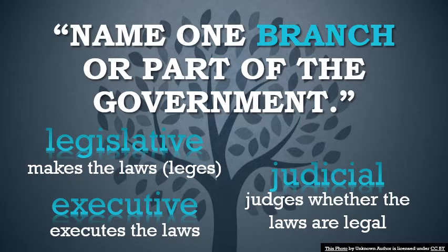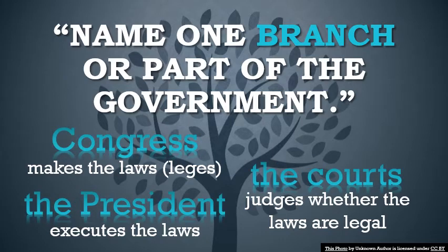So again: legislative, judicial, executive. These are the formal names of the branches of government. That being said, this question is worded so vaguely — so generally — name one part of the government, that you actually have lots of different options for answering it. Here are a few more answers recommended by the USCIS guide. Congress — that's what we call the legislative branch, another word for it. The courts — the judicial branch is made up of legal courts. And then the president is the head of the executive branch. So these are all good answers for this question.